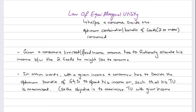In the previous videos we discussed how a rational consumer allocates his resources or his given income, and how he maximizes his total utility given a single product or a single good — a single commodity. We saw how many units he would buy with his given income in order to maximize his utility.